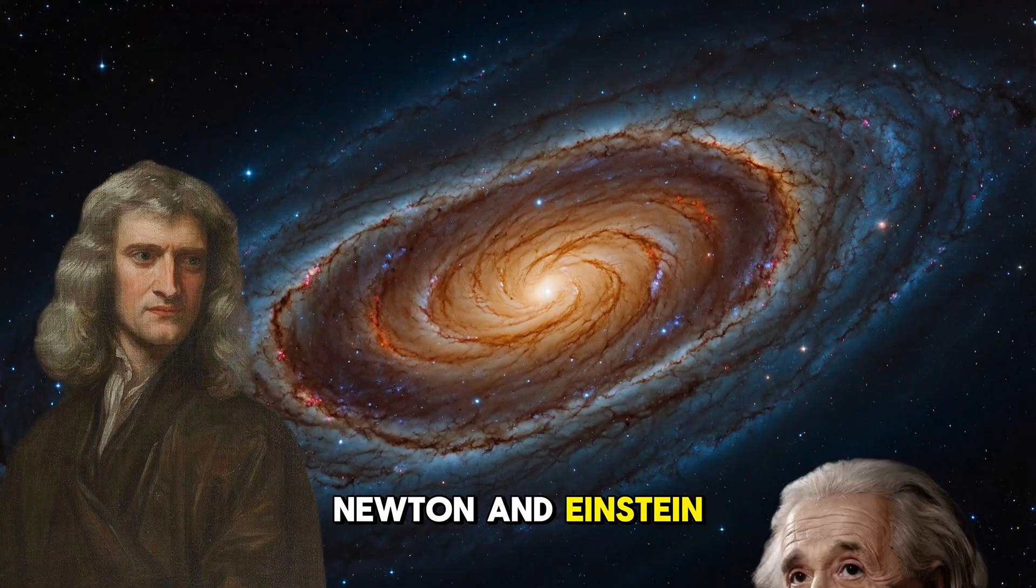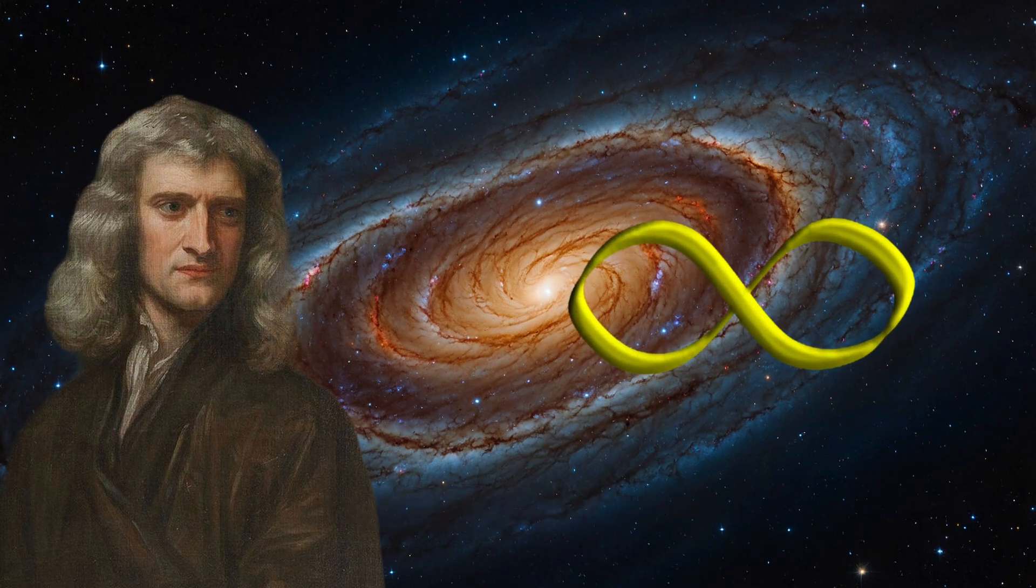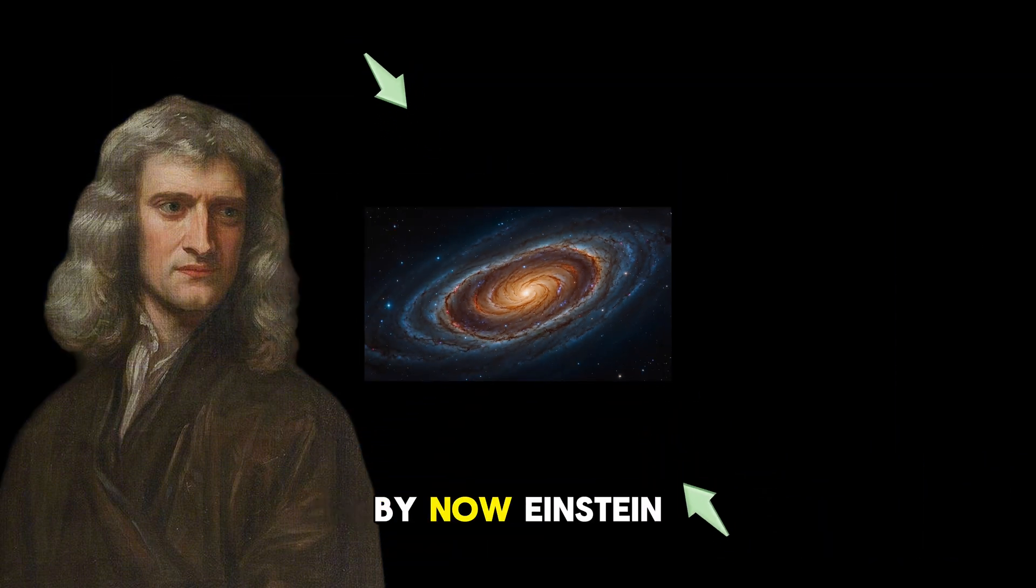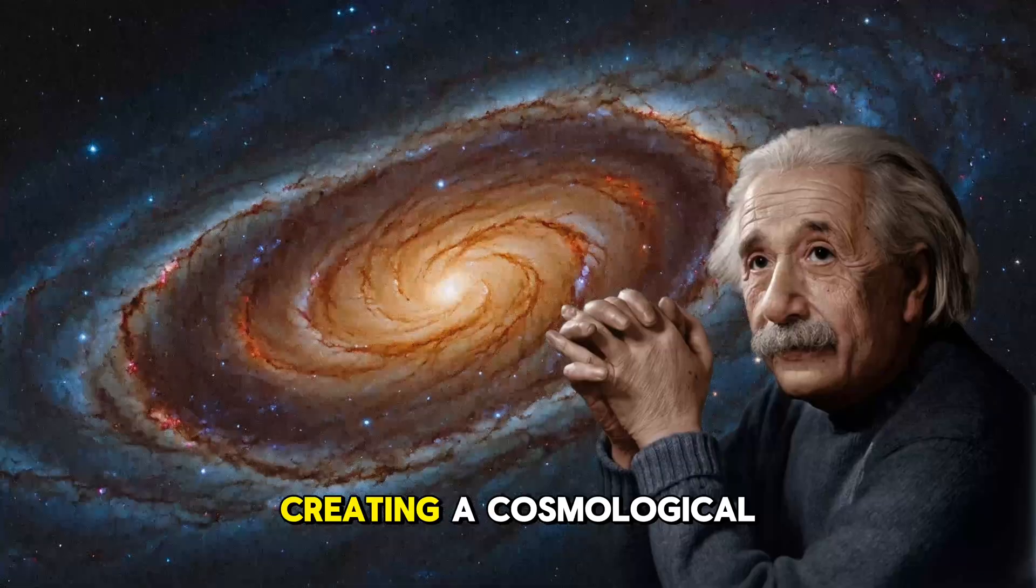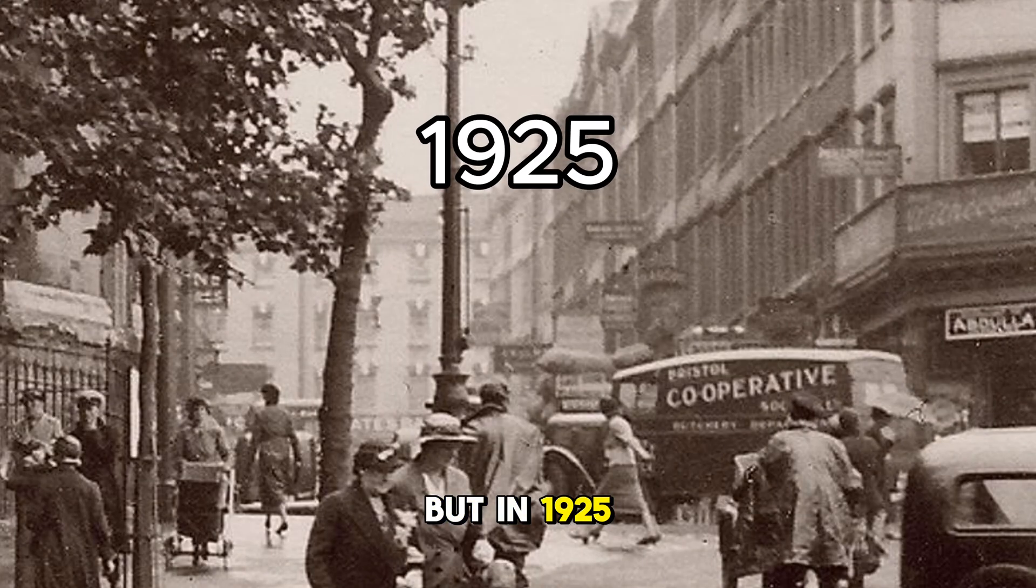As time went on, scientists like Newton and Einstein built upon these ideas. Newton believed the universe had to be infinite. Why? Because if it weren't, the gravity of all that matter would have collapsed it by now. Einstein, for his part, assumed the universe was static, creating a cosmological constant to hold everything in place.